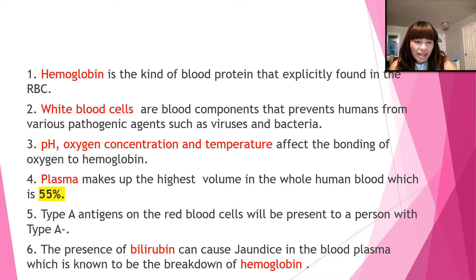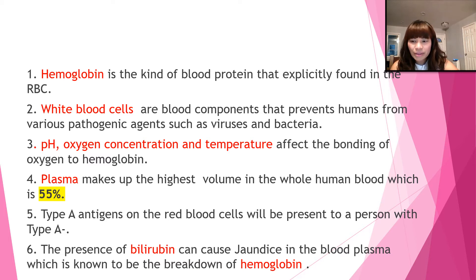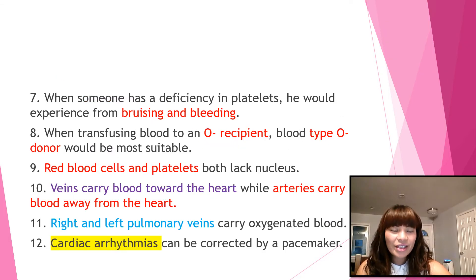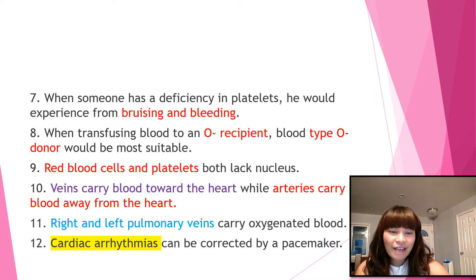Number six: the presence of bilirubin can cause jaundice in the blood plasma, which is known to be the breakdown of hemoglobin. Number seven: when someone has a deficiency in platelets, they would experience bruising and bleeding. If you find this question on your TEAS exam, this pointer will help you answer it.